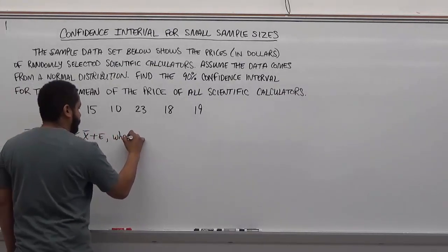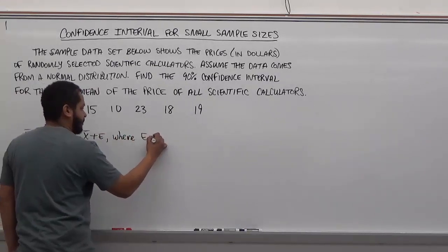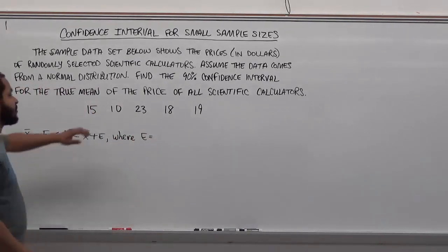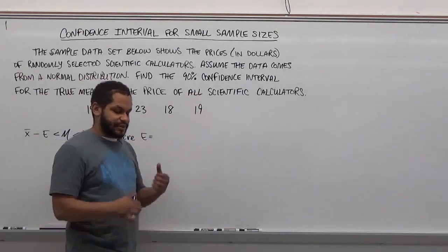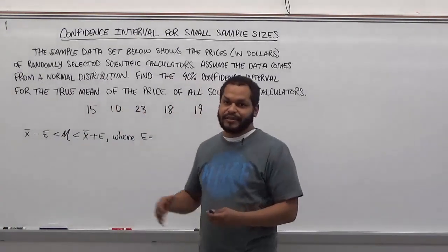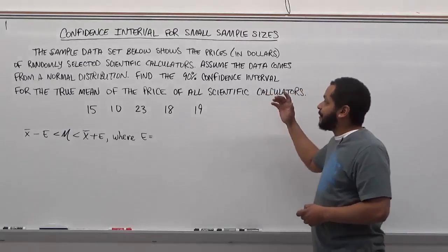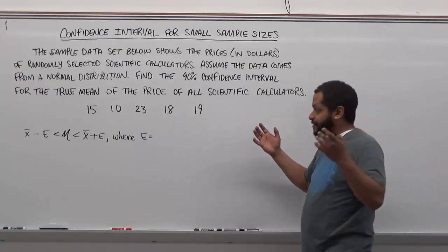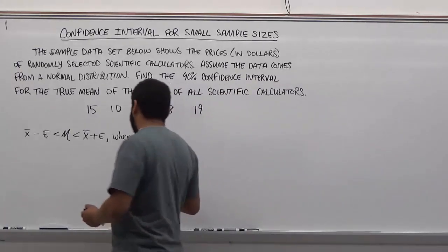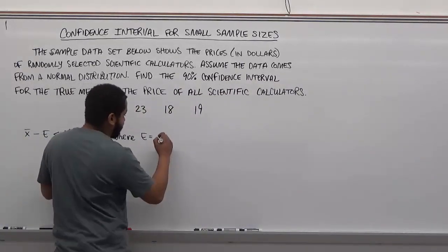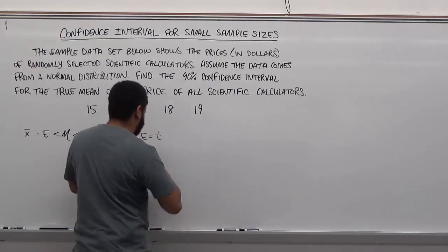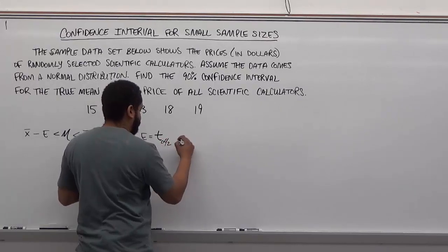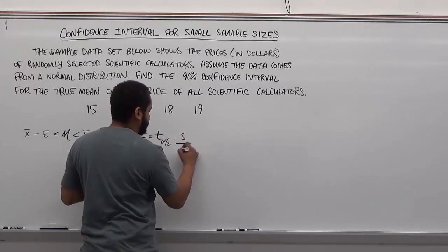In this case we're using a t distribution because our number of samples are only 5. Since we have a small sample size, we must use a t distribution because it's not normally distributed until you get to 30 or more. And also, we don't know the standard deviation of this problem, so we can't use a z score chart, we have to use a t score chart. And so our margin of error formula is the t critical value times the standard deviation over the square root of n.